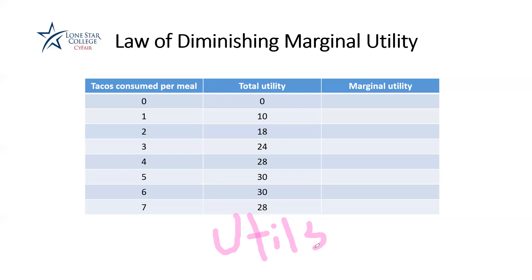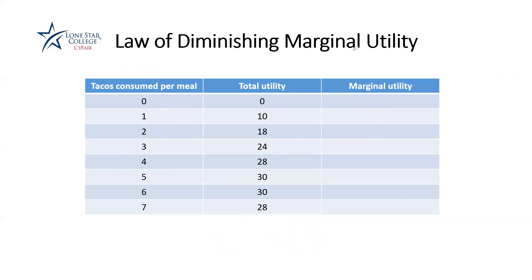Here's how you calculate marginal utility. Marginal utility doesn't exist for quantity zero. For the first taco, you look at these two numbers: the change in total utility divided by change in quantity, so it's 10 minus 0 divided by 1 minus 0, giving you a marginal utility of 10. For the second taco, it's 18 minus 10 divided by 2 minus 1, which equals 8. Since quantity is going up by one, the denominator is just 1 in the formula. So your marginal utility for the second taco is 8.